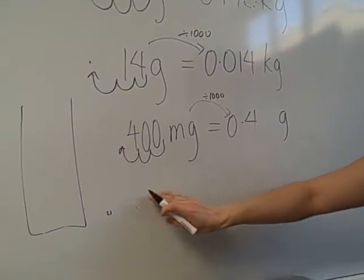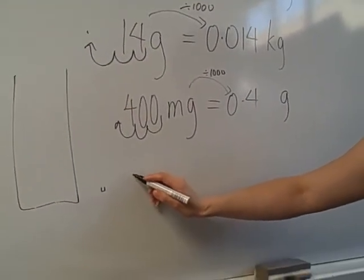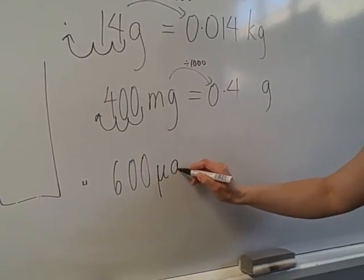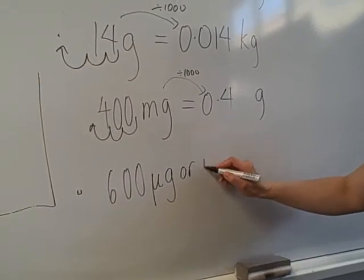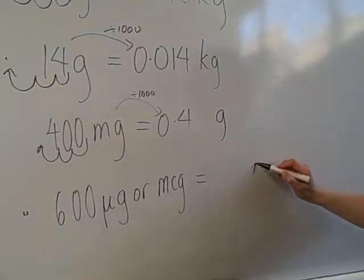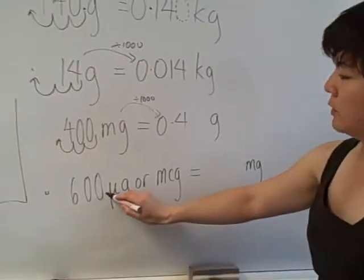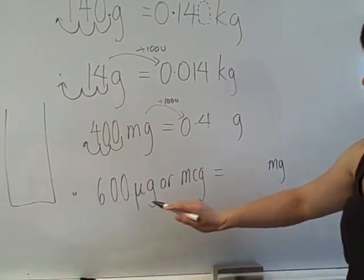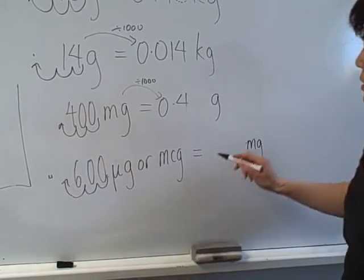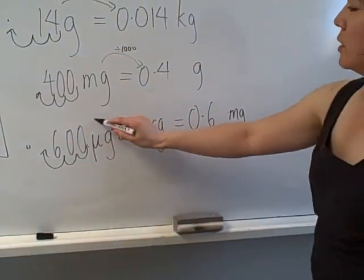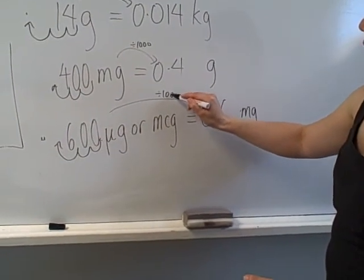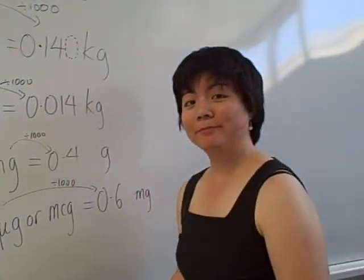And if we do another one, let's say we've got micrograms, 600 micrograms, or let's say we call it like this, MCG. If we want to go back to milligrams, then we have to divide by 1,000. So we go this way, 1, 2, 3, so I get 0.6 milligrams. Okay. Good.